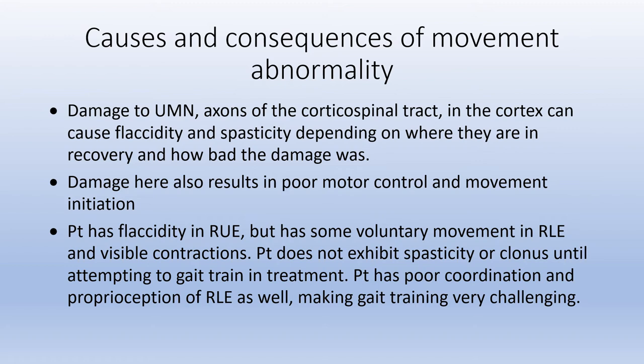Regarding causes and consequences of movement abnormality: damage to upper motor neurons and the axons of the corticospinal tract in the cortex can cause flaccidity and spasticity depending on where the patient is in recovery and how severe the damage was. Damage also results in poor motor control and movement initiation. The patient has flaccidity in the right upper extremity, which never really improved, but has some voluntary movement in the right lower extremity and visible contractions. She does not exhibit spasticity or clonus until gait training, and has poor coordination and poor perception of the right lower extremity, making gait training very challenging.